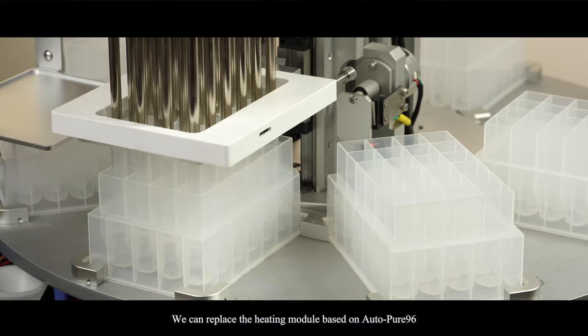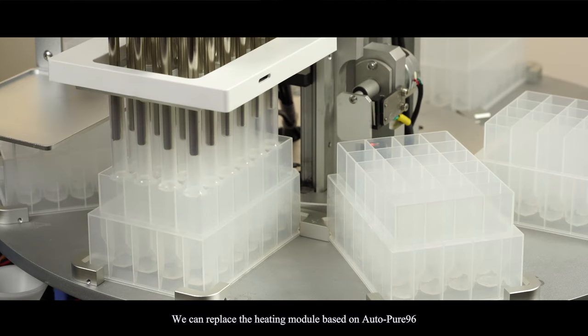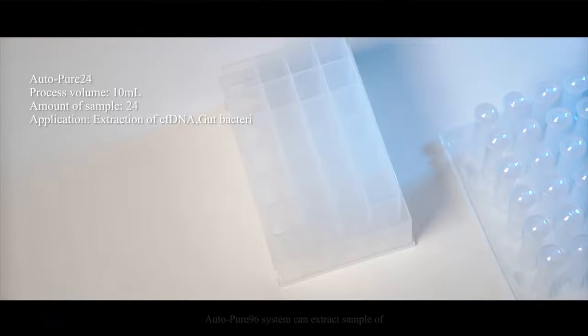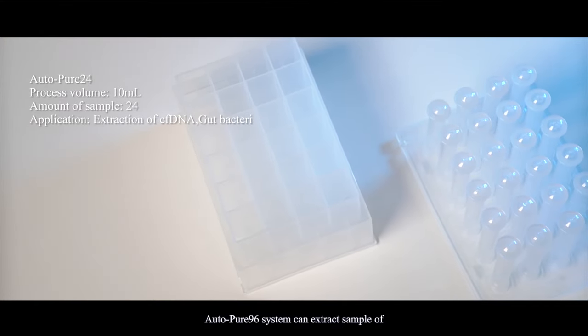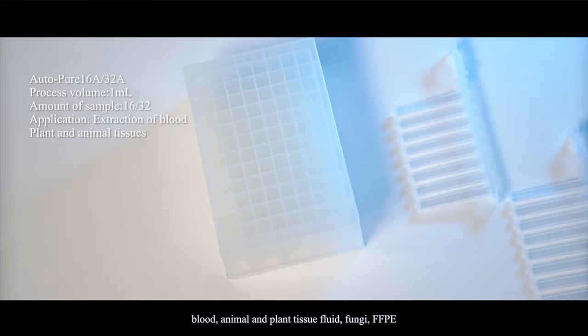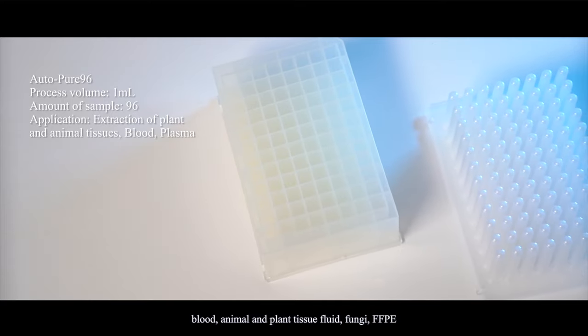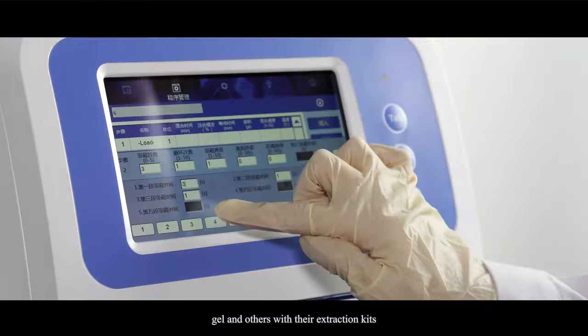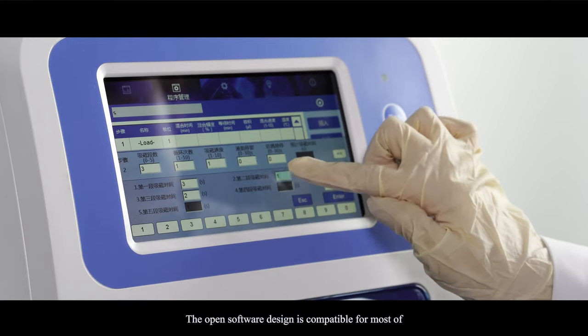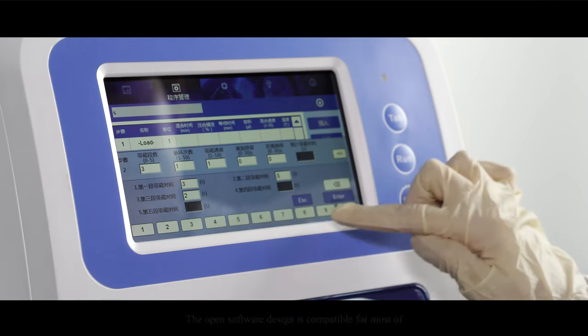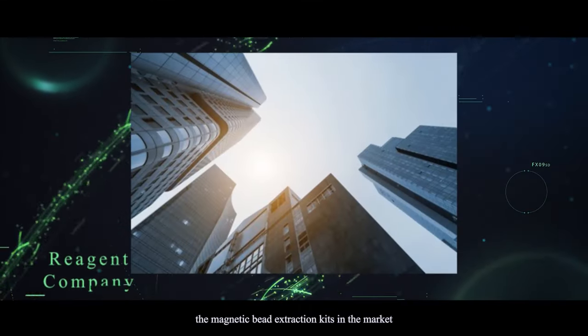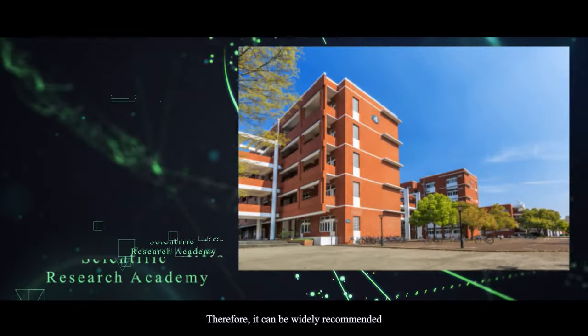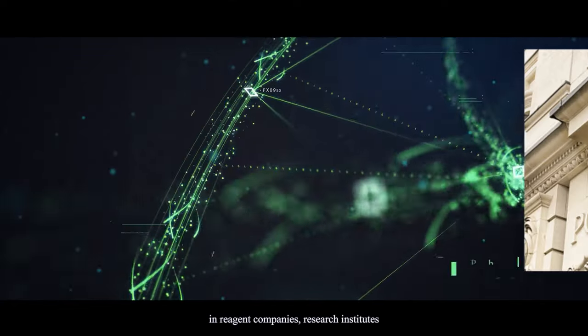Auto Pure 96 system can extract samples of animal and plant tissue, fluid, fungi, FFPE, gel, and others with your extraction kits. The open software design is compatible for most of the magnetic bead extraction kits in the market.